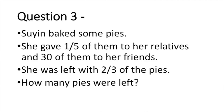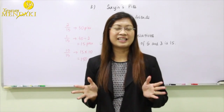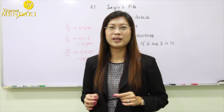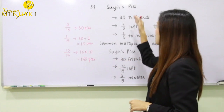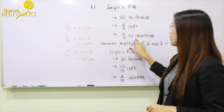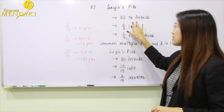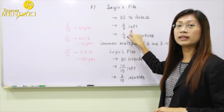Question three: Suying baked some pies. She gave one fifth of them to her relatives and 30 of them to her friends, and she was left with two thirds of the pies. How many pies were left? Suying gave one fifth to relatives and 30 pies to friends, and was left with two thirds.